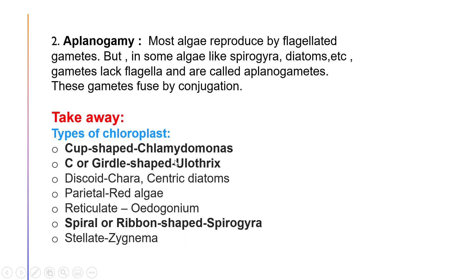Next is aplanogamy. Most algae reproduce by flagellated gametes, but in some algae like Spirogyra and diatoms, the gametes lack flagella and are called aplanogametes. These gametes fuse by conjugation.